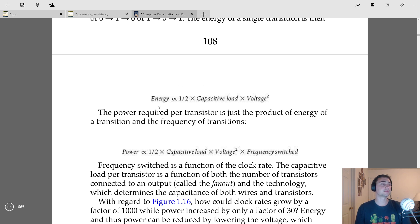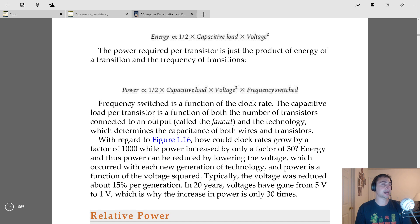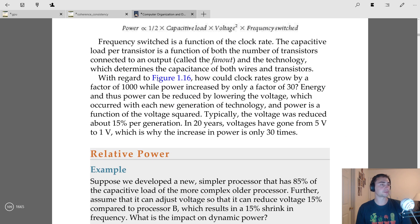The power required per transistor is just going to be a product of the energy of a transition and the frequency of transitions. So in this case, one transition: one half that original value, capacitive load times voltage squared, and then we just multiply by how fast we're switching it, or the frequency switched. Here, the frequency switched in our computers is going to be a function of clock rate.